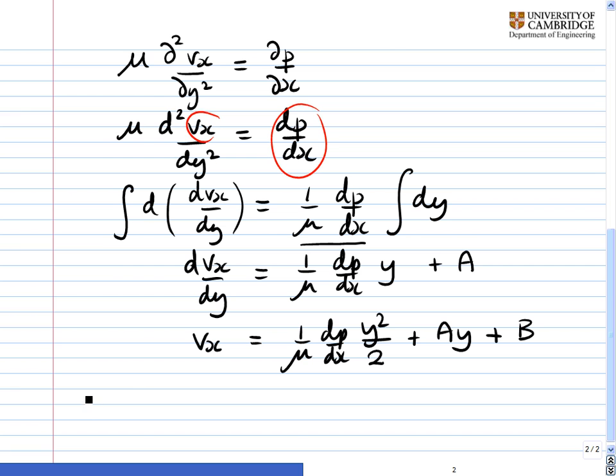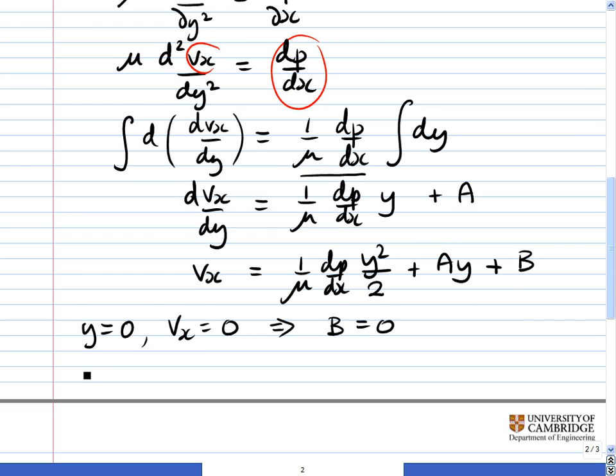Now the first boundary condition is that at y equal to 0, vx is equal to 0. The no-slip boundary condition at the bottom wall. And that, by inspection, you can see setting y to 0 here and vx to 0 implies that B is equal to 0. The next boundary condition is that at y equal to big H, vx is equal to big V. And this is going to take a bit of algebraic manipulation now.